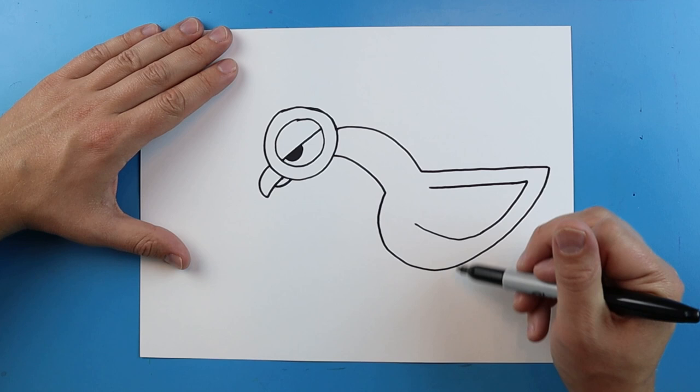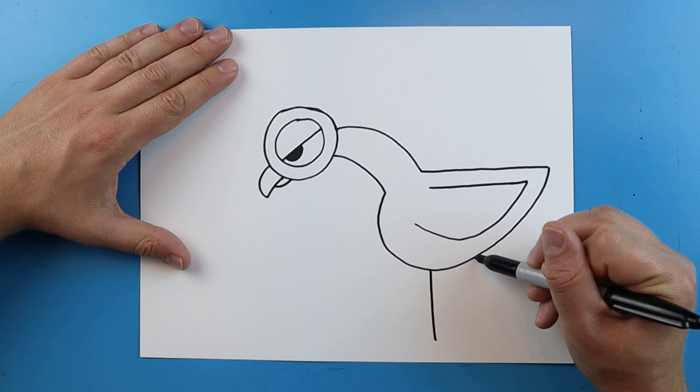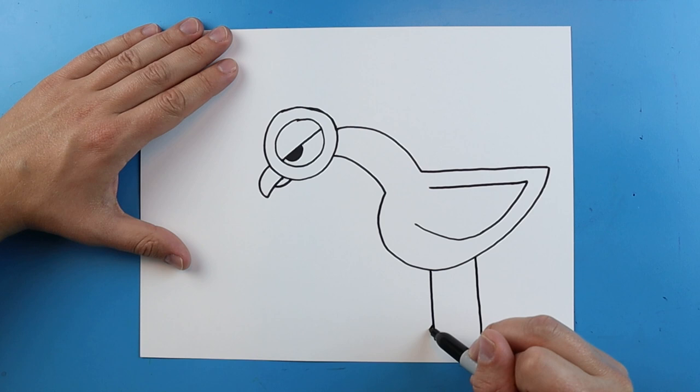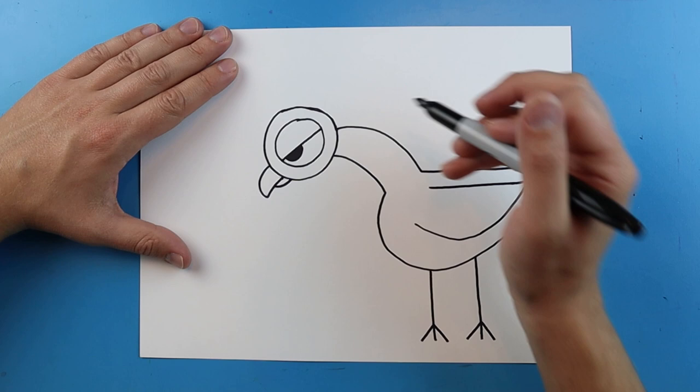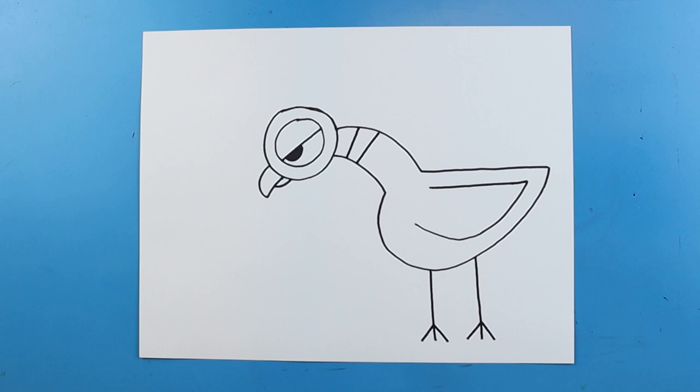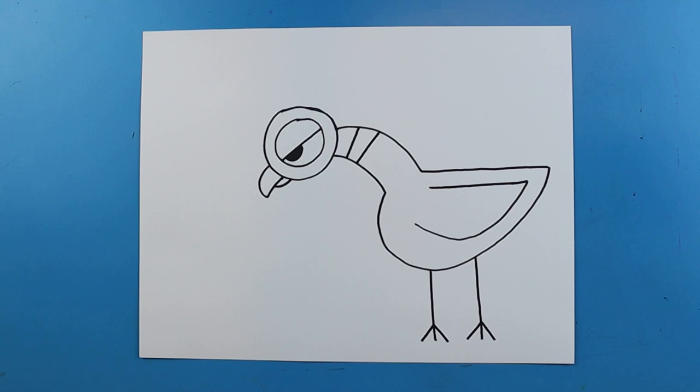Then I want to make the feet, so you're just going to draw two lines that go straight down. Then I'm going to add one line over here and one over here. I'll do the same thing here, one line down and then one line down. Then right on top of here I'm going to add a line here and then a line right here for the neck of the pigeon.